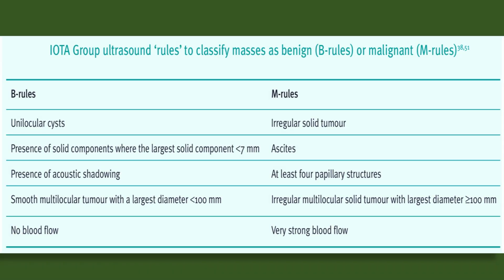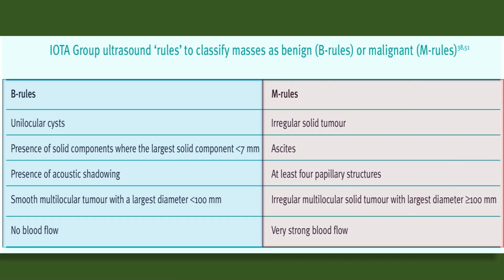The B and M rules from the IOTA group classify masses as benign or malignant. B rules: unilocular cysts, presence of solid components where the largest solid component is less than 7 mm, presence of acoustic shadowing, smooth multilocular tumor with largest diameter less than 100 mm, and no blood flow. M rules: irregular solid tumors, ascites, at least 4 papillary structures, irregular multilocular solid tumor with largest diameter ≥100 mm, and very strong blood flow.